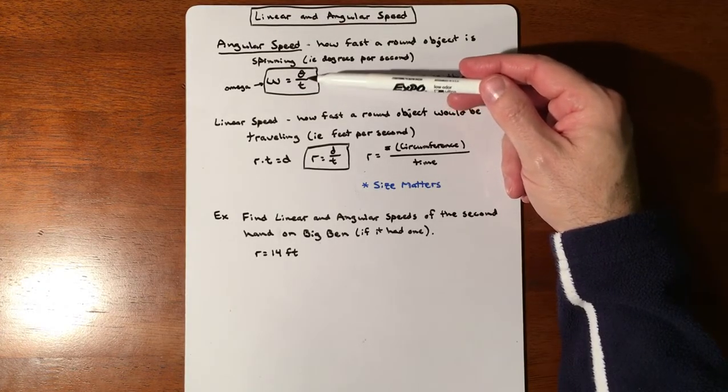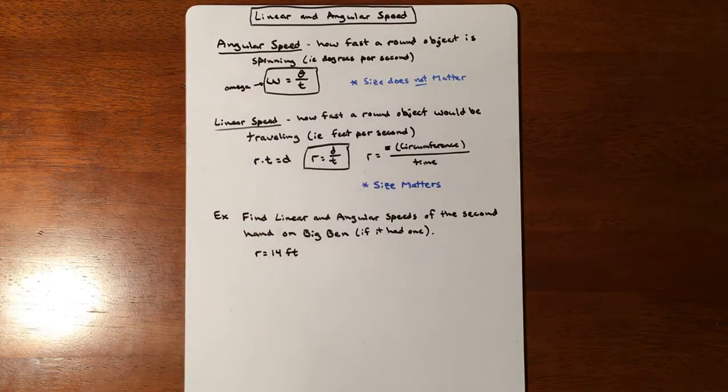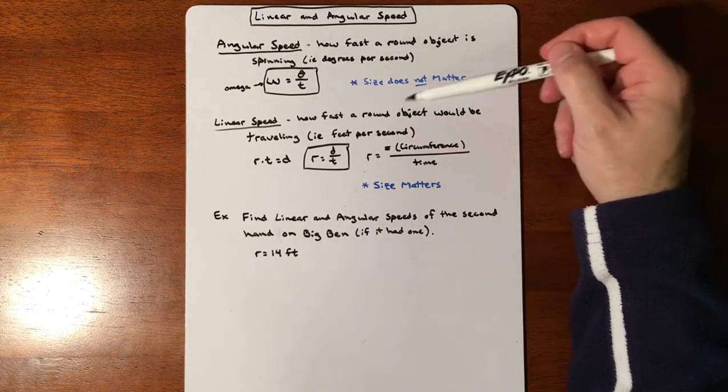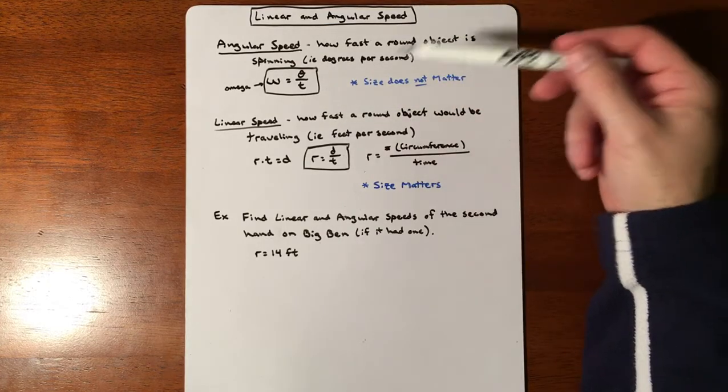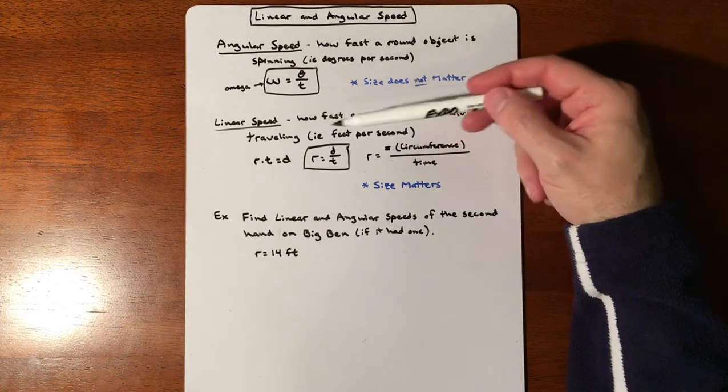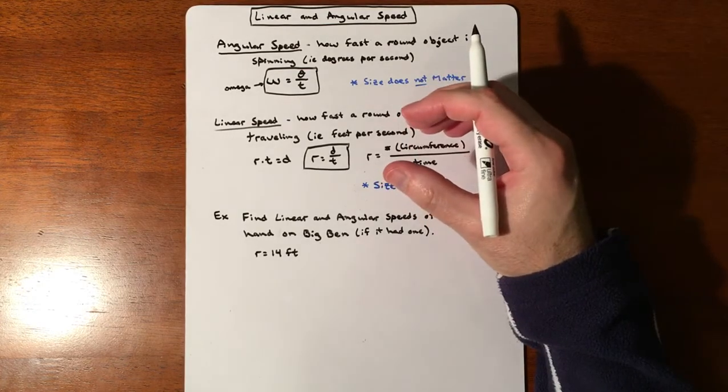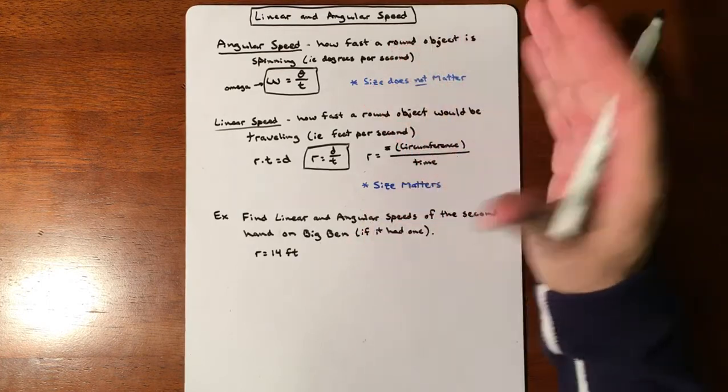Size doesn't matter at all for angular speed, as opposed to linear speed where it does matter. Linear speed is how fast a round object is traveling. The idea would be a tire rolling down the road. If the tire has one revolution but it's a really small tire, it doesn't get as far in the same amount of time as a really big tire.